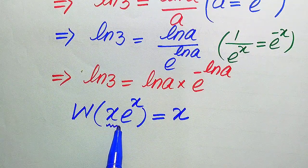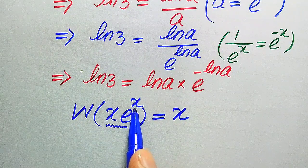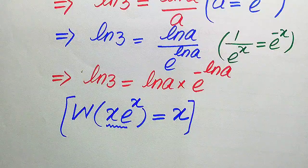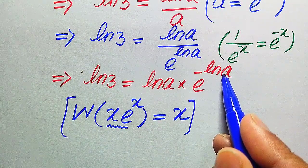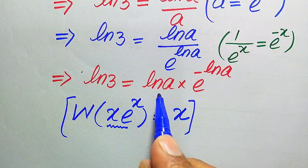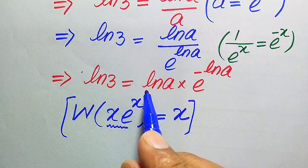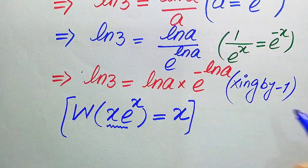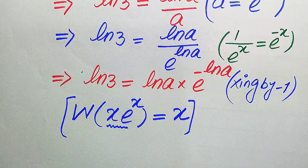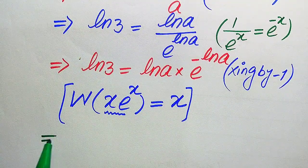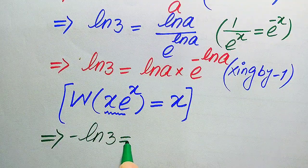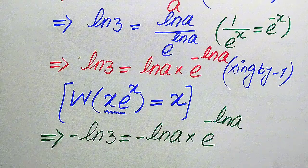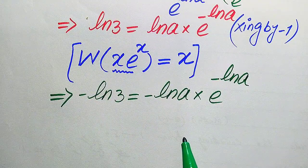We can apply the Lambert W function when the exponent of e is multiplied by a term. Here the exponent of e is minus log a, so according to the definition, minus log a should be multiplied by the term. But currently we have a positive log a, so we need a negative sign. We multiply both sides by minus one, giving us: minus log 3 equals minus log a multiplied by e to the power of minus log a.